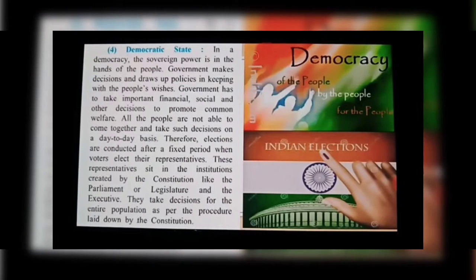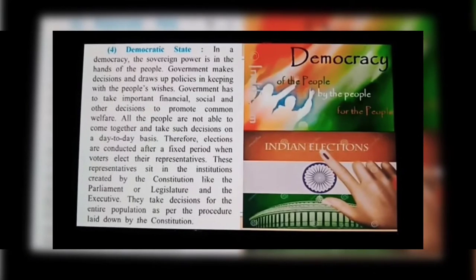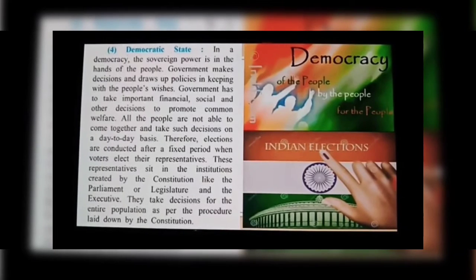Fourth is Democratic State. In a democracy, the sovereign power is in the hands of the people. The government makes decisions and draws up policy in keeping with the people's wishes, taking important financial, social, and other decisions to promote common welfare. Since all people cannot come together for day-to-day decisions, elections are conducted after a fixed period. Elected representatives sit in institutions created by the Constitution — like the Parliament, Legislature, and Executive — and take decisions for the entire population as per the procedure laid down by the Constitution.